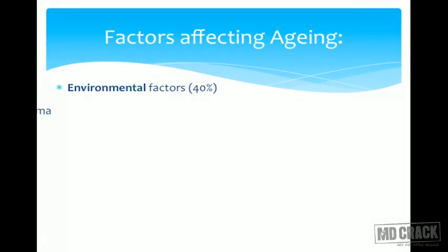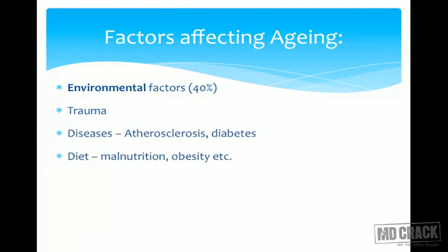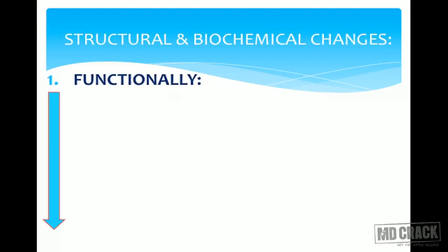Environmental factors influencing aging include accidents, traumatic factors, and various disorders. Conditions like diabetes, atherosclerosis, fat and calorie intake, malnutrition, and obesity all influence the aging process. Psychological factors and social health factors also contribute. These factors cause stress, which in turn has a significant effect on the aging process.